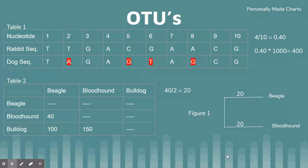OTUs are operational taxonomic units used to classify groups of closely related individuals. They are based on differences in the DNA sequence that are identified when the sequences are aligned. This is shown in Table 1.